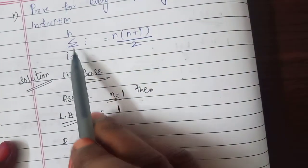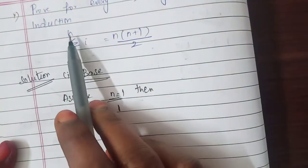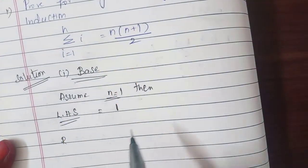Why? Because i equal to 1, 2 up to n equal to 1. So obviously i will become 1.